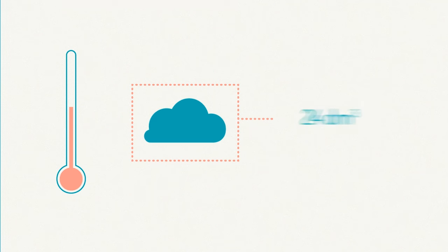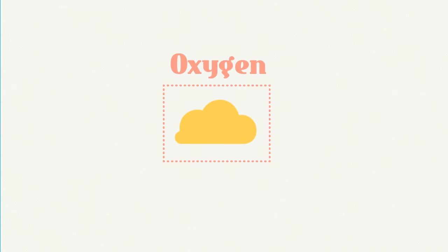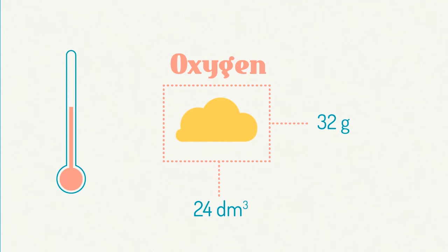Okay, so let's look at what we already know. We know that one mole of any gas at room temperature occupies 24 decimetres cubed. One mole of oxygen gas, O2, has a mass of 32 grams. So, 32 grams of oxygen gas at room temperature occupies 24 decimetres cubed.